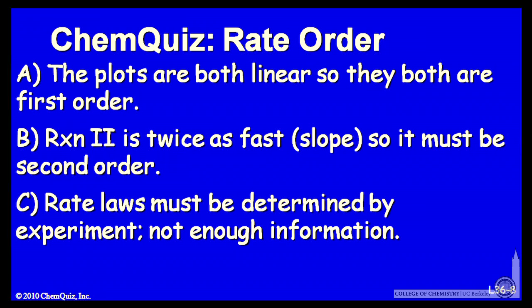Let's look at a possible explanation for each answer. A, the plots are both linear, so they're both first order. B, reaction 2 is twice as fast, you can tell by the slope, so it must be second order. C, rate laws must be determined by experiment, and there's not enough information here. Think about those three and make a selection.